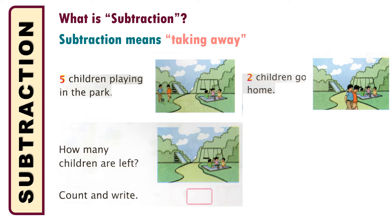What we have learned from here: we have seen that five children were playing, among them two children go away, and three children were left. That means five subtraction two is equal to three. This is how we will do all the subtraction problems.